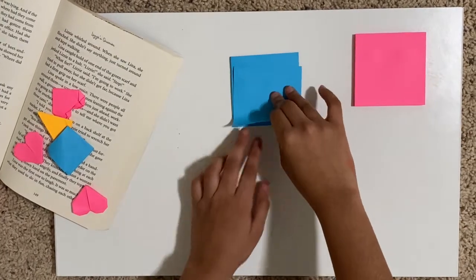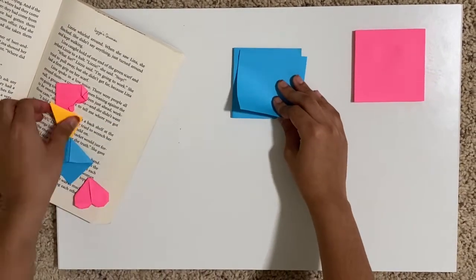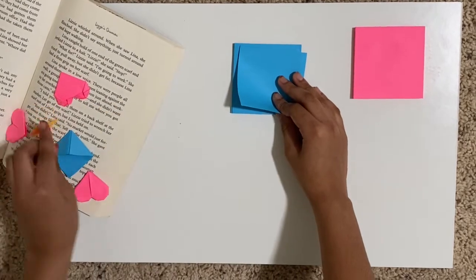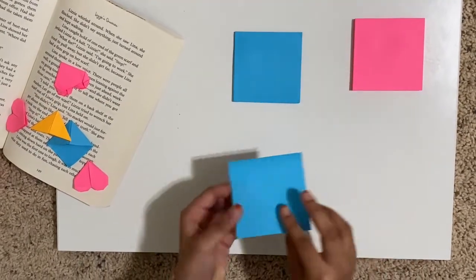So first I'm going to start off by making this type, which is basically this type, just a sticky note.